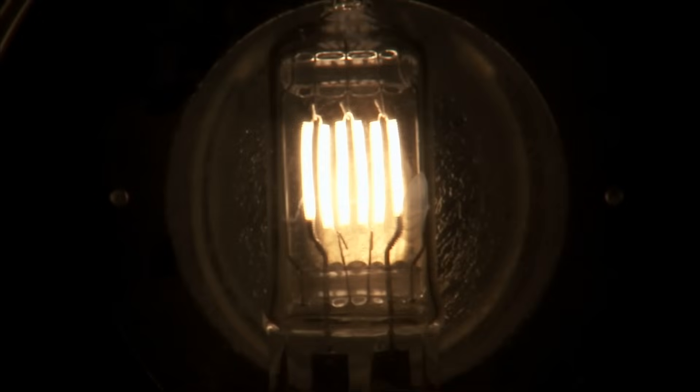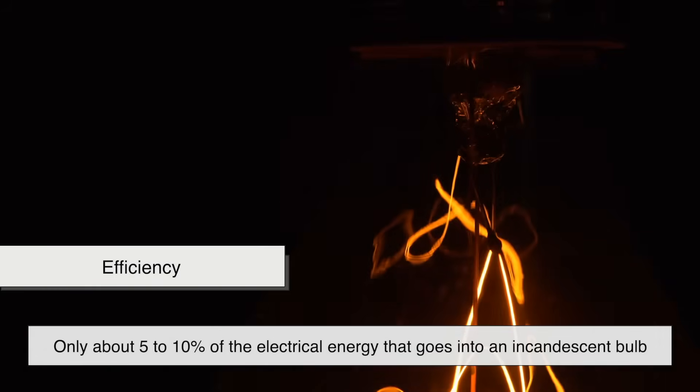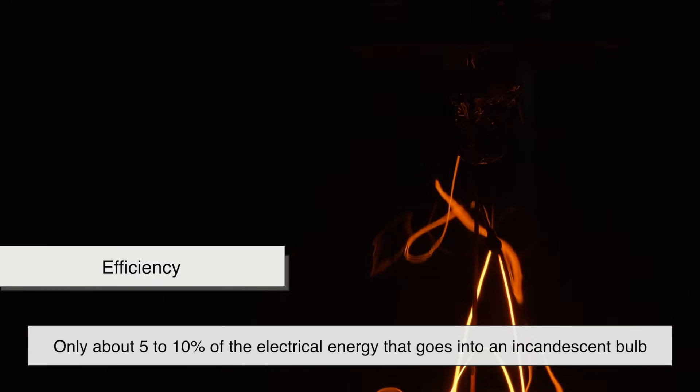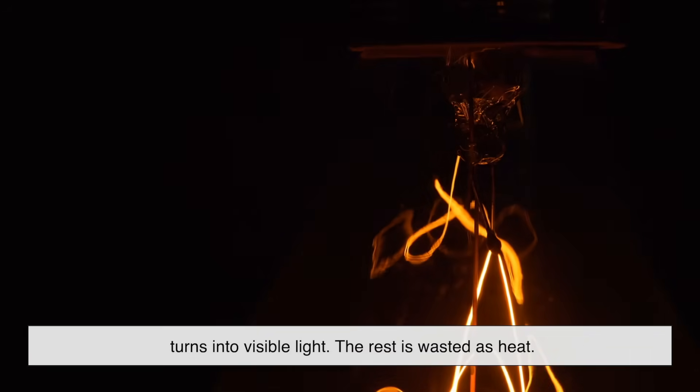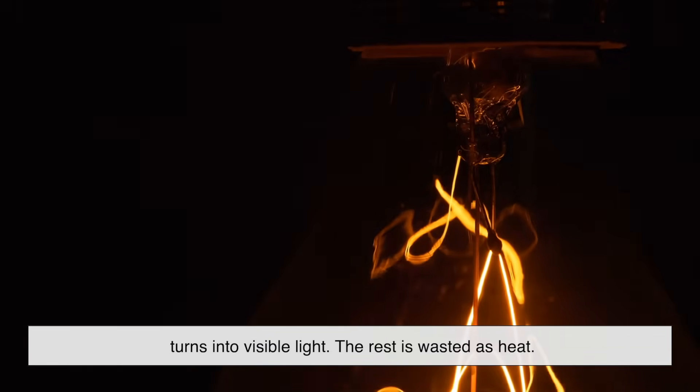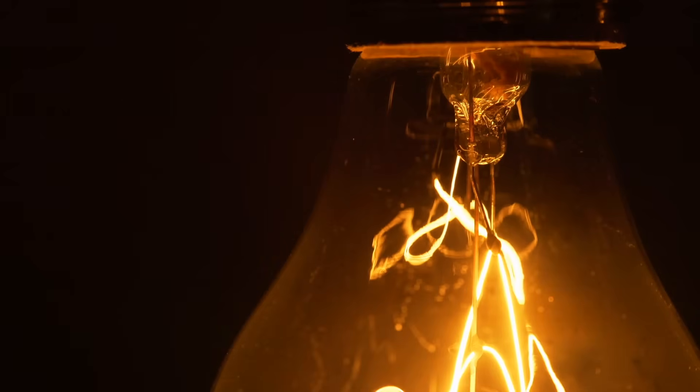You might be wondering, if tungsten filaments are so tough, why don't we use them much anymore? Well, it comes down to efficiency. Only about 5-10% of the electrical energy that goes into an incandescent bulb turns into visible light. The rest is wasted as heat. That's like heating up your room just to read a book.